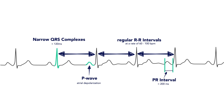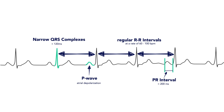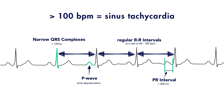You could have rates below 60 beats per minute that are still sinus, but these are referred to as sinus bradycardia, and rates that are greater than 100 beats per minute and still sinus, which we call sinus tachycardia.